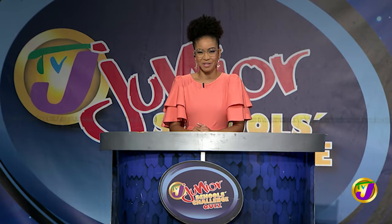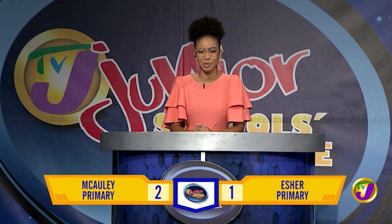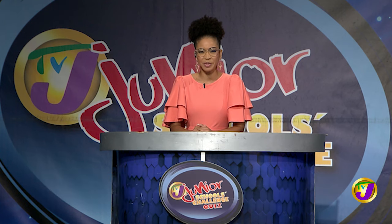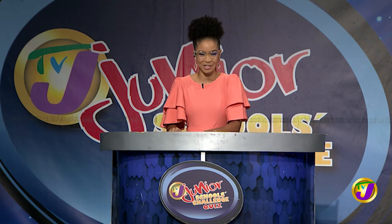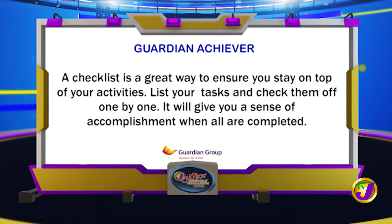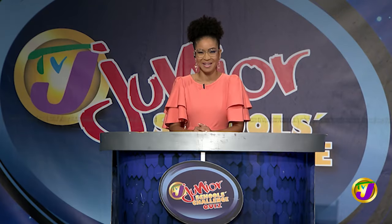And that's the end of section one. The scores are Macaulay Primary on two and Esher Primary on one. We go to the break with a friendly tip from Guardian Achiever: A checklist is a great way to ensure you stay on top of your activities. List your tasks and check them off one by one. It will give you a sense of accomplishment when all are completed. Stay with us. Season 20 of TVJ's Junior Schools Challenge Quiz returns after these messages.